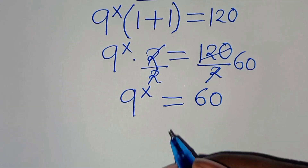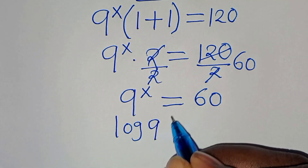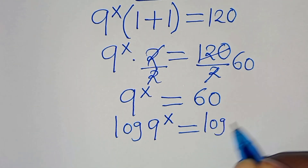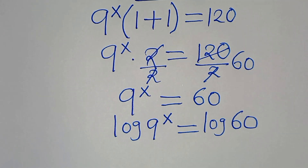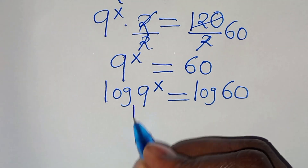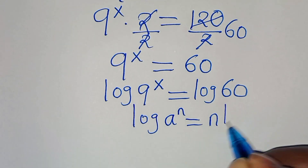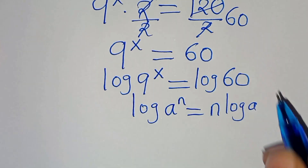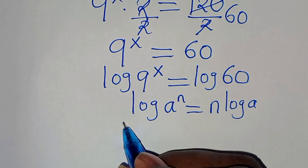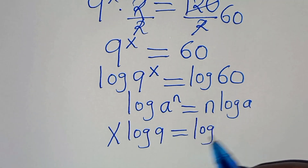To solve for x, we introduce logarithm on both sides so that we have log of 9 to the power of x equals log of 60. Now log of 9 to the power of x is in the form of log a to the power of n, which equals n times log a. Applying this power property, log 9 to the power of x becomes x times log 9, and this is equal to log 60.